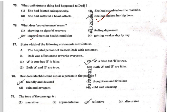Question 77: 'State which of the following statements is true or false.' Statement A: 'The hospital staff treated Dadi with contempt' — contempt means disrespect. Statement B: 'Dadi was affectionate towards everyone.' If you read the passage, Dadi was affectionate and very friendly — not only to patients but also to doctors and nurses. So the correct answer is the second option: Statement A is false (no one was treated with contempt in the hospital), whereas Statement B is correct — Dadi was affectionate towards everyone.